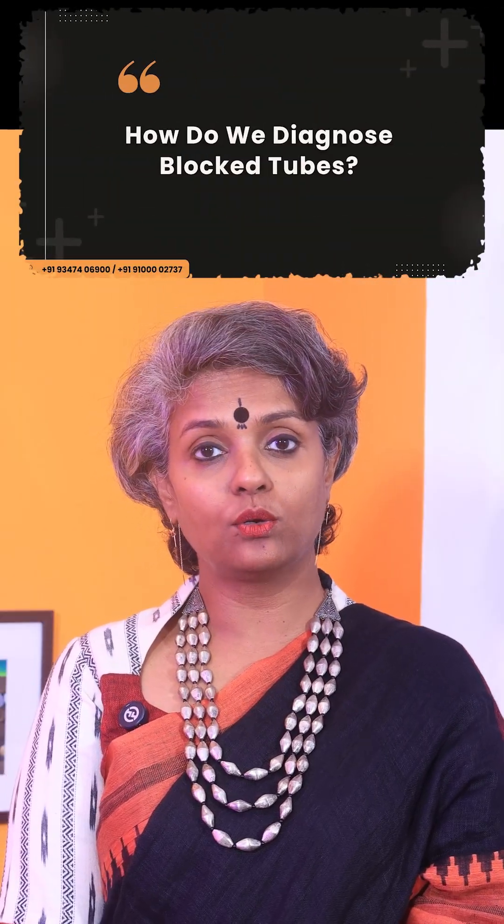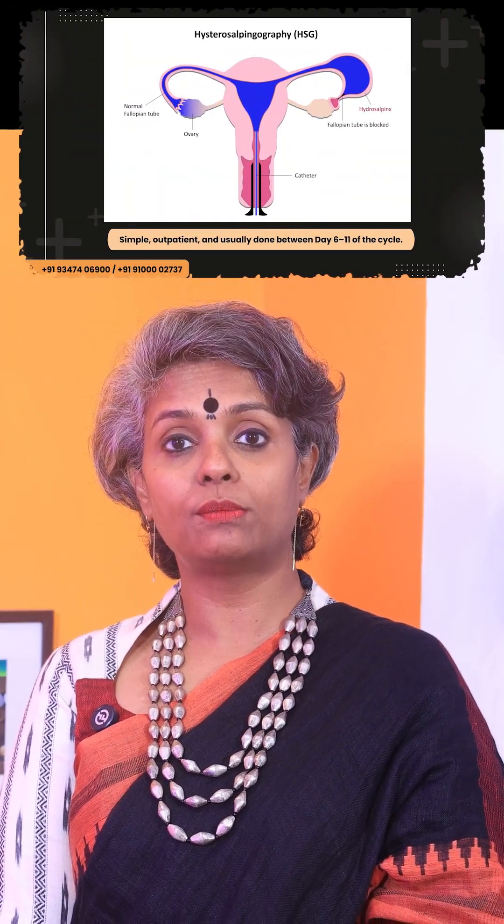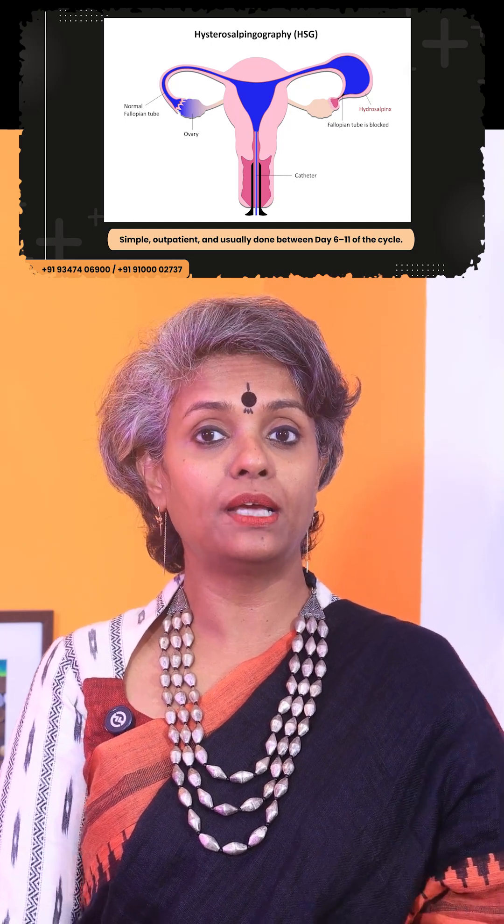There are several methods to diagnose a blocked tube. Hysterosalpingogram is one, where an X-ray test is performed and dye is injected into the uterus to check if it flows through the tubes. It's a very simple outpatient procedure, usually done between day 6 to day 11 of the cycle, and can give us very good information about the tubal blockage.